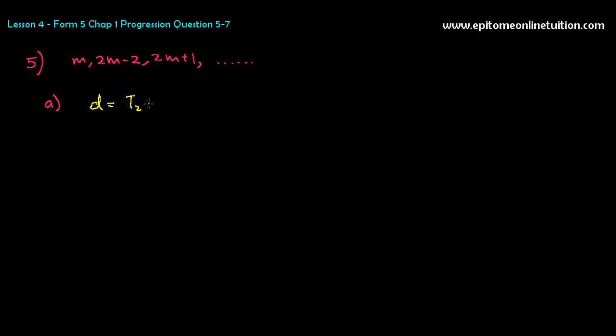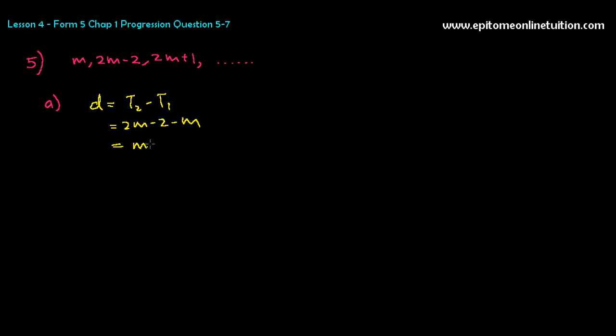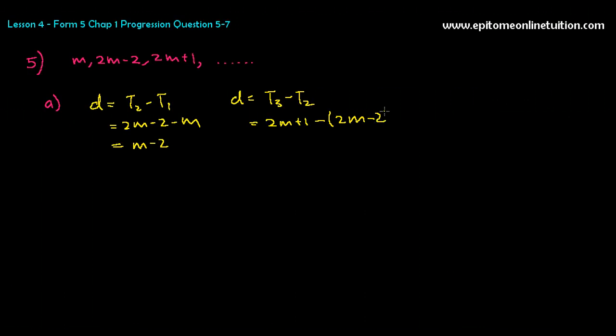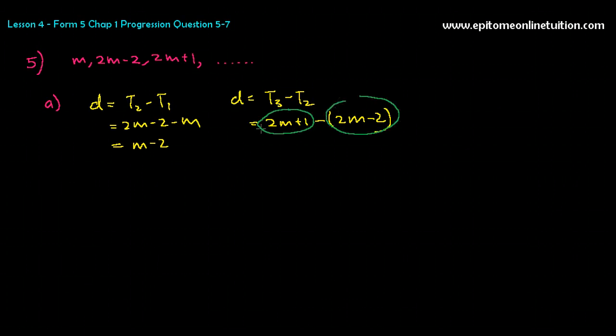So D would equal to T2 minus T1. That means it is 2M minus 2 minus M. So that means it's 2M minus M is M minus 2. Then the students will get stuck here. Oh, okay, there's still an M here. How am I supposed to find it? Well, you can find D using another method. D is also T3 minus T2, which is 2M plus 1 minus bracket 2M minus 2. Please remember to put a bracket because this is T3, and this is T2. So 2M minus 2M, there's no more. And then, so 1 minus minus 2, that means 1 plus 2. So that is a 3. So D is 3. You can straight away get your D is 3. That means M minus 2 is equals to 3. So that would mean that M is equals to 5.